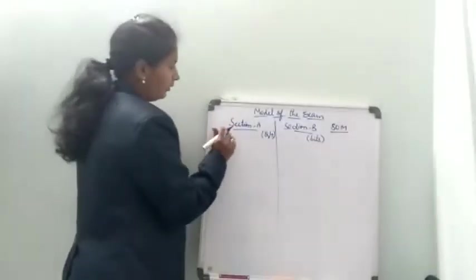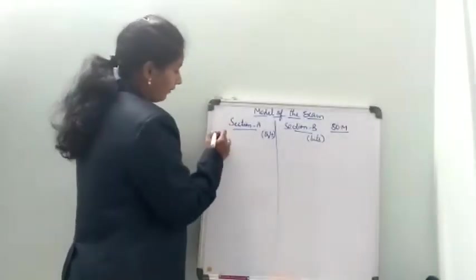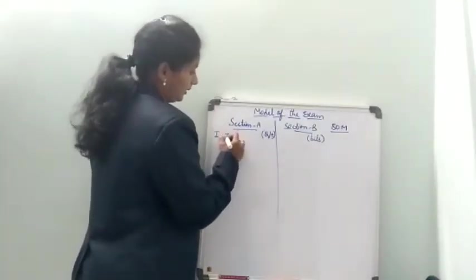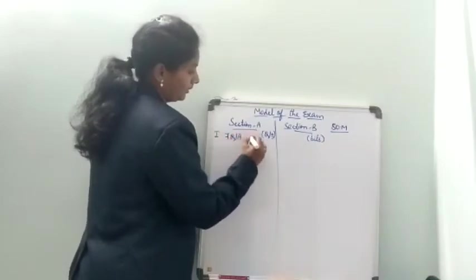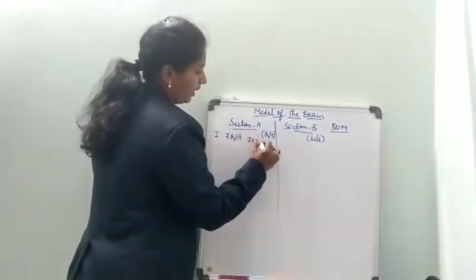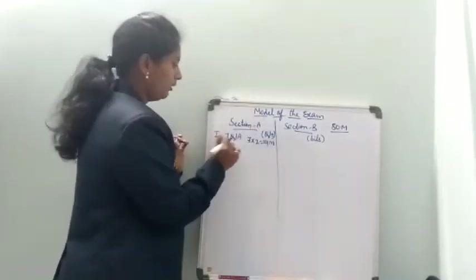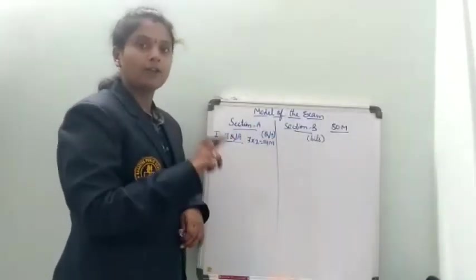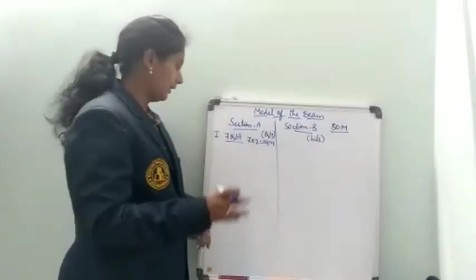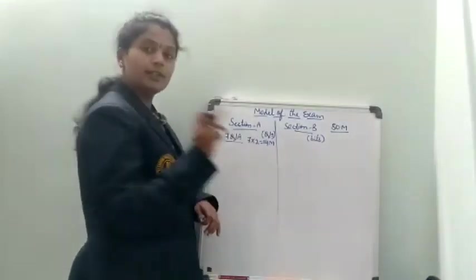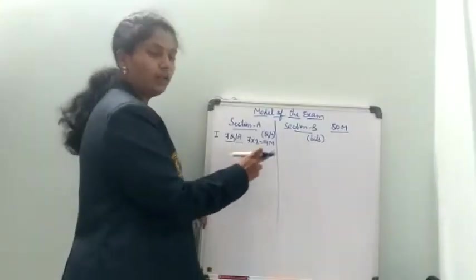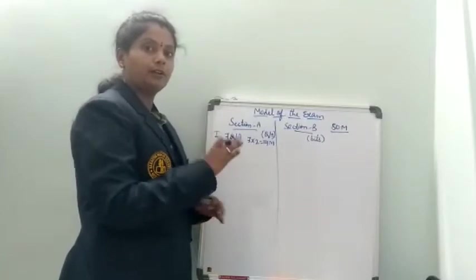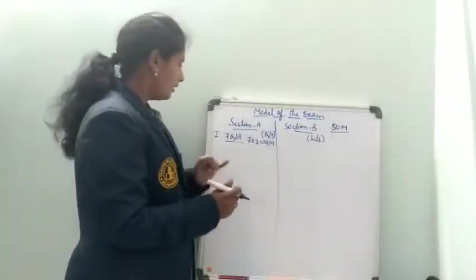Coming to Section A, the first bit has 7 question answers. 7 into 2 marks equals 14 marks. So there will be 7 questions numbered 1 through 7, each carrying 2 marks, totalling 14 marks. These questions will be equally distributed between the two lessons.